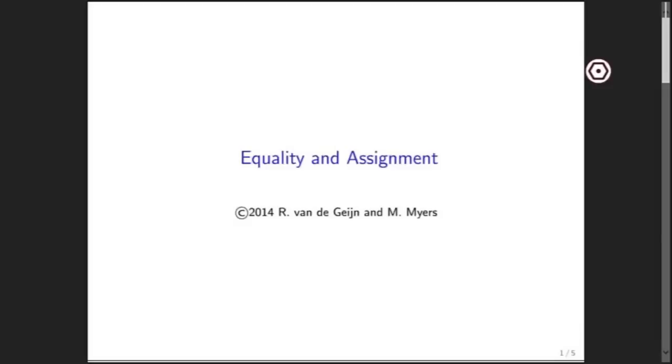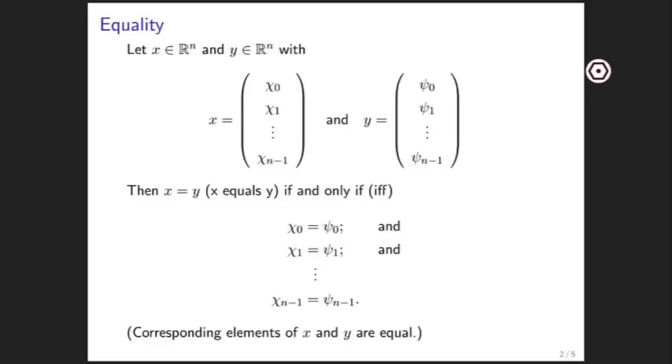Alright, let's look at when two vectors are equal. If we're given two vectors x and y that are of the same size, then x is equal to y if and only if corresponding elements are equal.